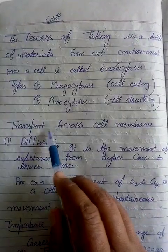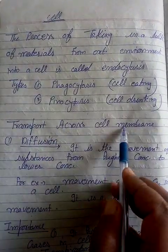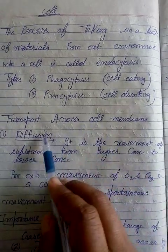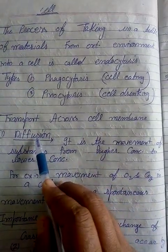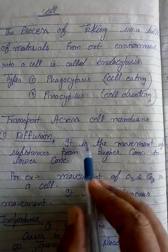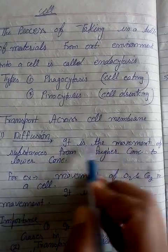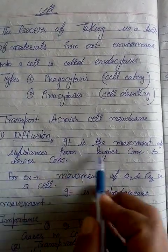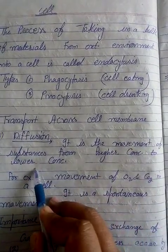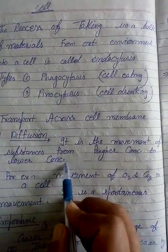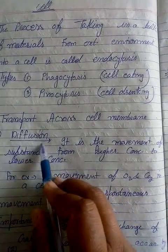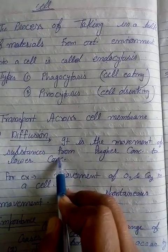Transport across the cell membrane — now we will discuss this topic. The first topic is diffusion. What is the meaning of diffusion? The movement of a substance from higher concentration to lower concentration is called diffusion.